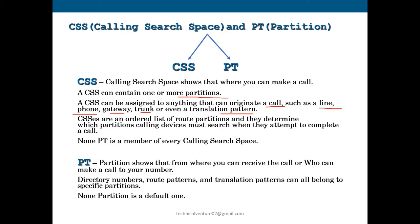CSS is present on the trunk, gateway, and phone because all of these can originate calls. CSS is an ordered list of route partitions, and they determine which partitions a calling device must search when it attempts to complete a call — meaning it will check all the partitions under that CSS to see where a call can be made.